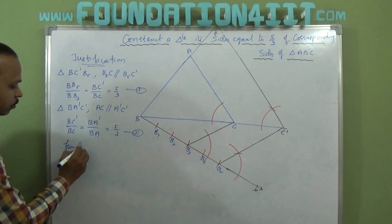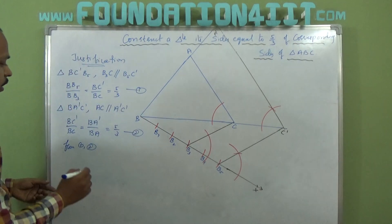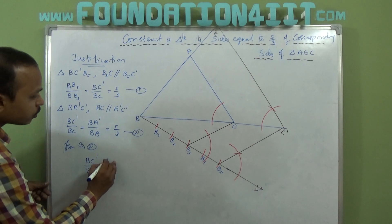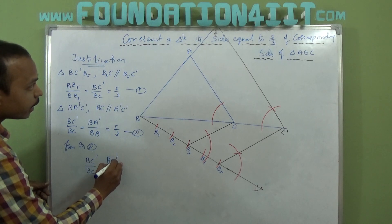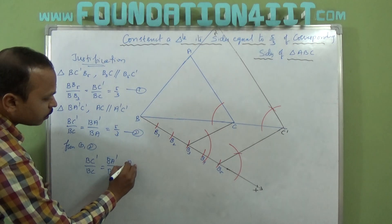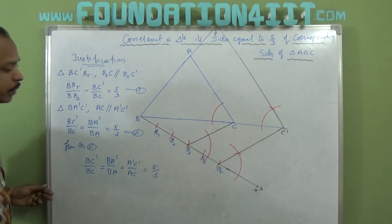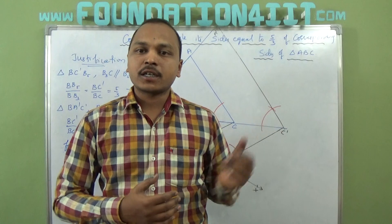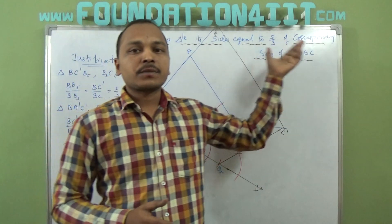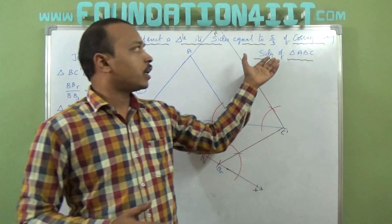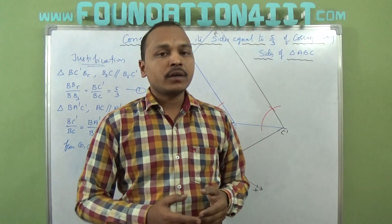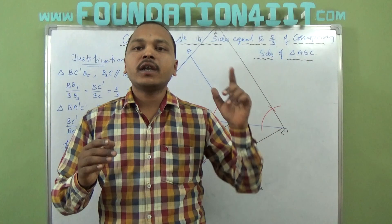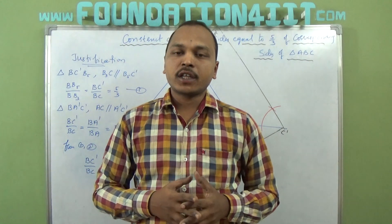From equations 1 and 2, every side is equal to 5/3 of the corresponding side. We can write: BC dash / BC = BA dash / BA = A dash C dash / AC = 5/3. In this way we can do the justification. The Basic Proportional Theorem concept is what we are applying for the justification. This is how we construct a triangle similar to triangle ABC with corresponding sides in ratio 5/3 — whether the ratio is proper or improper. A previous video showed a proper fraction case; this video covers the improper case. More information and steps of construction are available via the link in the description or on the website.